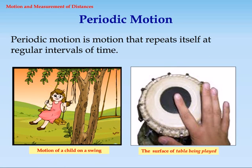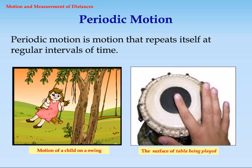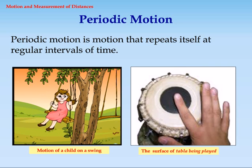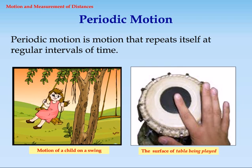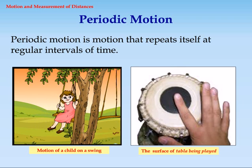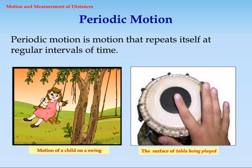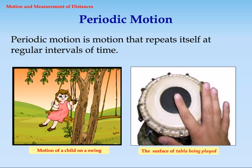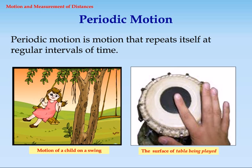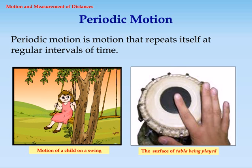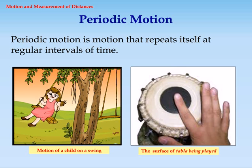Number 3: Periodic motion. Periodic motion is motion that repeats itself at regular intervals of time. Example: Motion of a child on a swing, and the surface of a tabla being played.